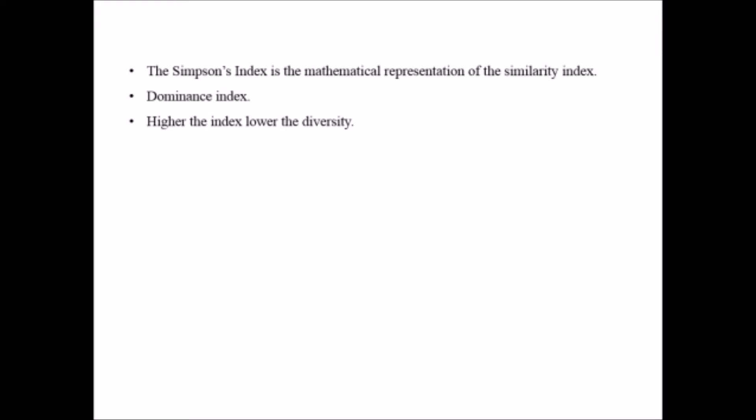If the index is higher, suppose there are two communities C1 and C2, and if we have some mathematical numerical value there, I will show you an example how to solve that. With the help of the formula, if we get the value of C1 more than C2, then we can say the similarity in community C1 is more compared to C2.